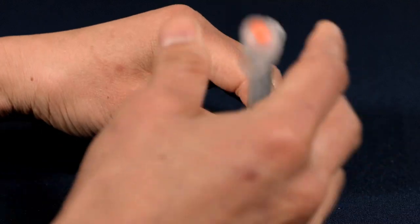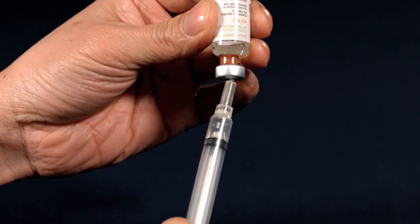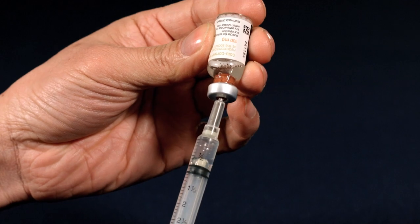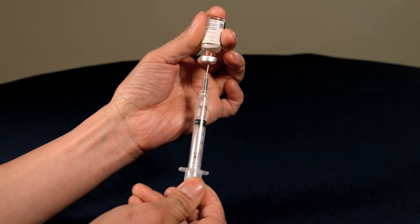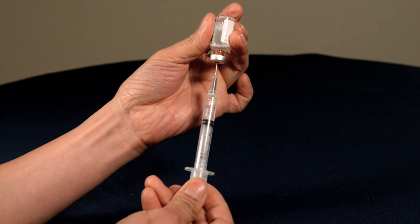Tip the Solucortef bottle upside down, drawing up all of the solution into the syringe. Make sure the needle stays below the surface of the liquid.